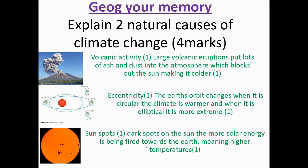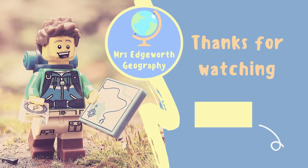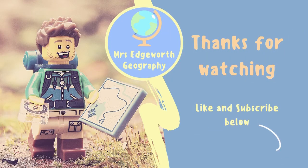Finally, sunspots are dark spots on the sun which emit more solar radiation, meaning higher temperatures are experienced on Earth. Give yourself a mark for that question.